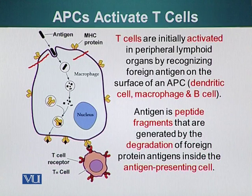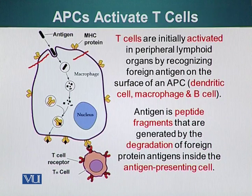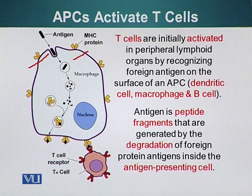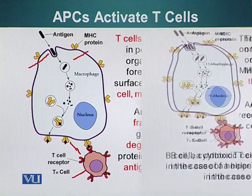This MHC protein molecule will then be moved to the surface of the antigen-presenting cell, and that small protein fragment will be displayed to the T-cells for recognition on their surface. Here, for example, is the T-cell and here is the T-cell receptor, shown in red. Let's see what happens from there on.